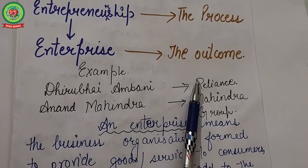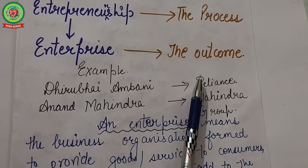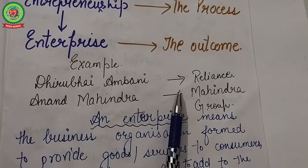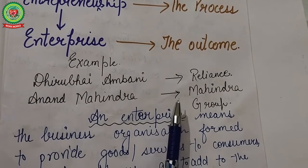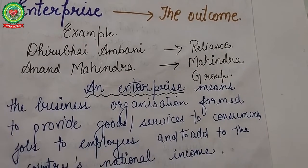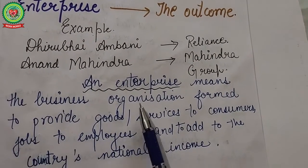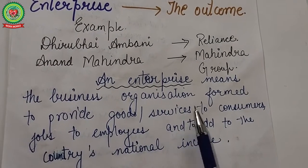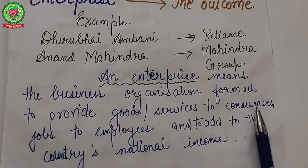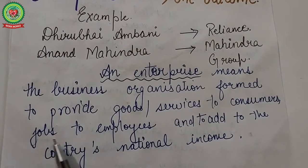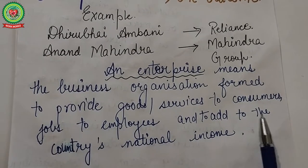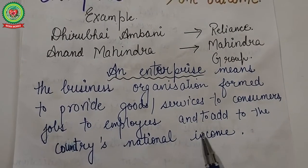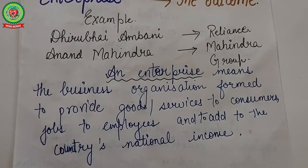For example, Dhirubhai Ambani is an entrepreneur, and Reliance Company is the enterprise. Likewise, Anand Mahindra and Mahindra Group. An enterprise means the business organization formed to produce goods and services to consumers, provide jobs to employees, and add to the country's national income.